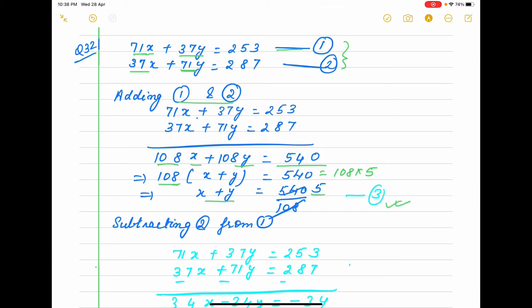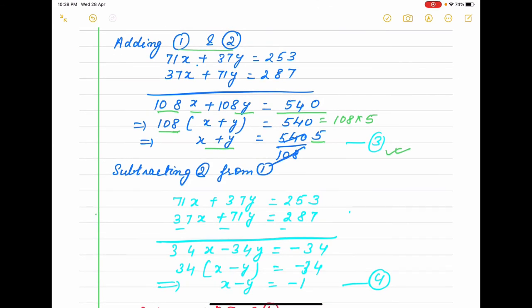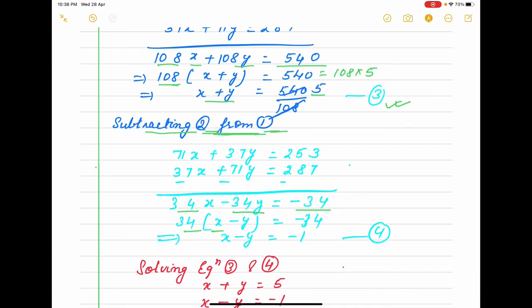When we subtract, you can subtract 1 from 2 or 2 from 1. But you write properly, because addition doesn't change, but when you are writing subtraction, you write properly. It is again subtraction, so 34x - 34y = -34. If 34 common, that is x-y = -34/34, that is x-y = -1.